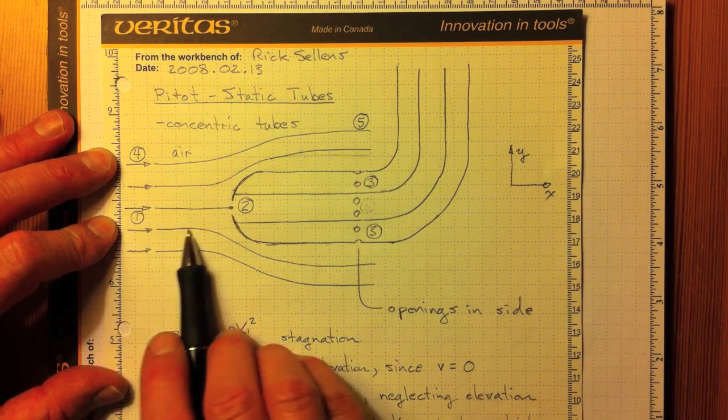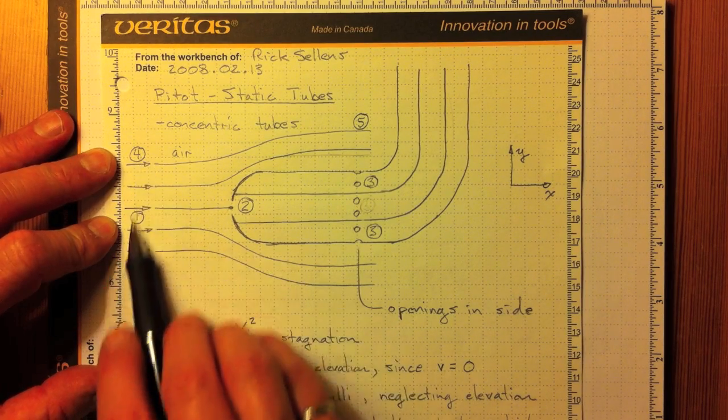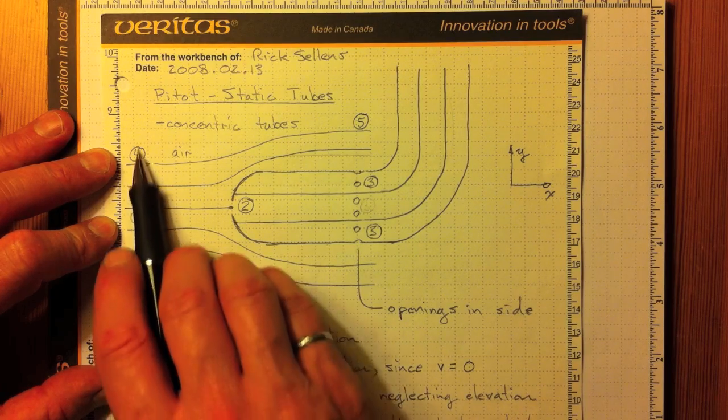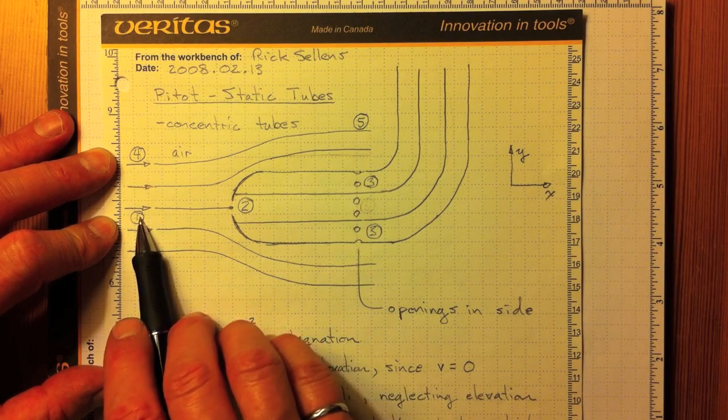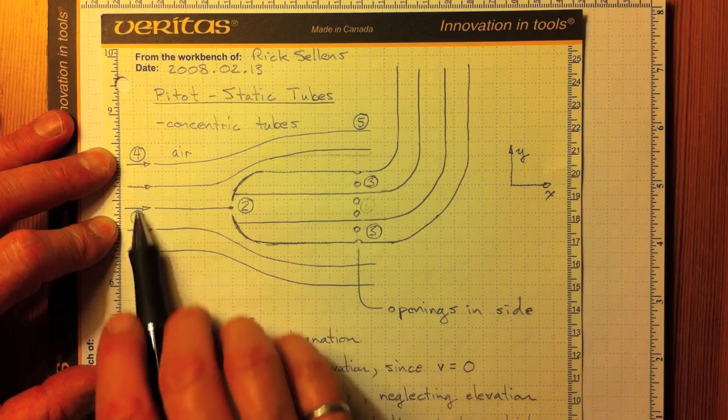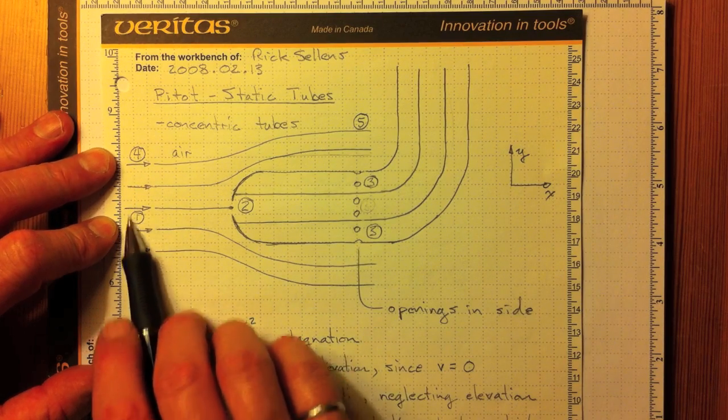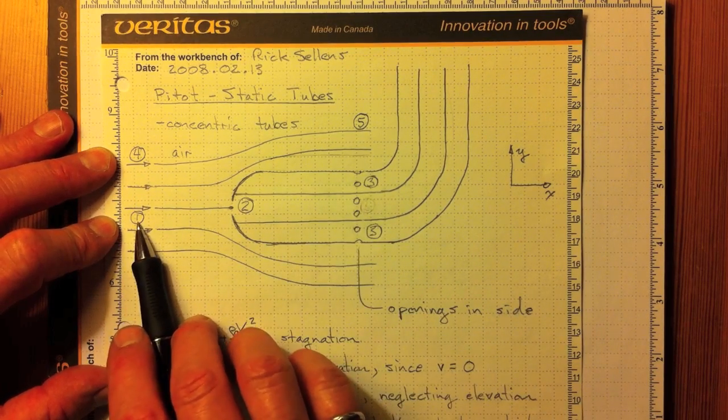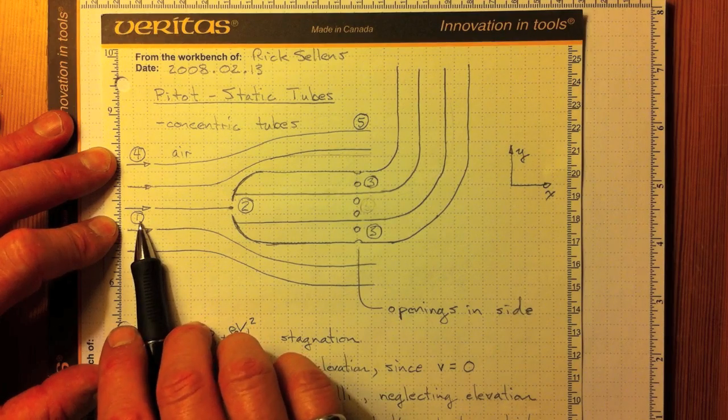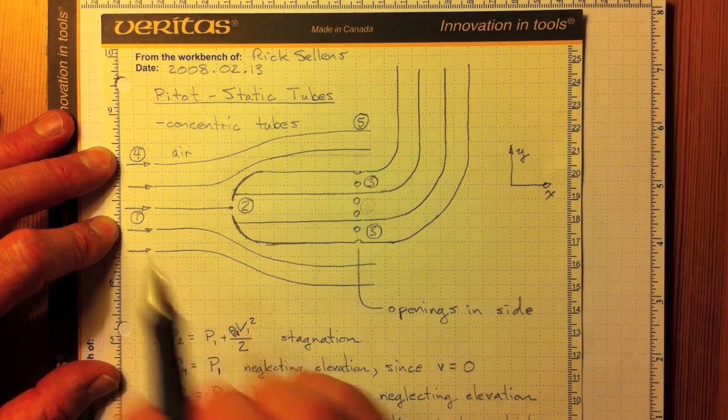And because these streamlines are all parallel, the velocity the same, and no significant elevation difference between 4 and 1, then we'll have the pressure at 4 being the same as 1. So thus, the pressure at 3 is the same as the pressure at location 1, and we get away from the problem we were talking about in the previous slide.